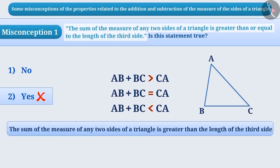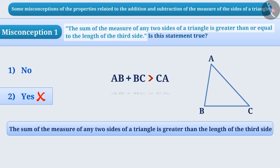The correct understanding is that the sum of the measurement of any two sides of a triangle is greater than the length of the third side. The sum cannot be less than or equal to the measurement of the third side. Hence, the correct answer to the given question is option 1.